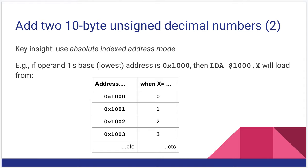So key insight here is we use absolute indexed address mode. So if we assume that our first operand has its low byte at $1000, then we don't actually have to specify every byte, we can load in from $1000, comma X. And whatever X is, we'll modify the actual address we load from. So if we start X at 0 on our first loop iteration, we get $1000 as our address. Increase X on the next iteration to 1, and our address will be $1001. Increase X to 2, we get $1002. Increase X to 3, we get $1003, and so forth.